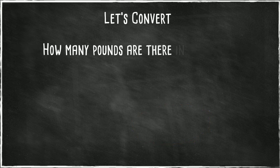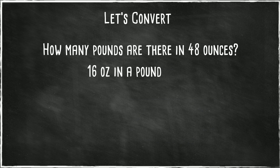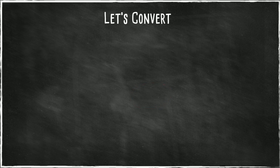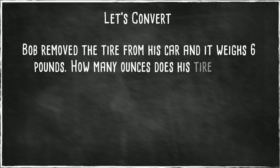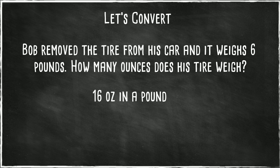How many pounds are found in 48 ounces? There are 16 ounces in a pound, so you take 48 and divide it by 16, and you get three pounds. Bob removed the tire from his car and it weighs six pounds. How many ounces does this tire weigh? Because there are 16 ounces in a pound, you can multiply six times 16.